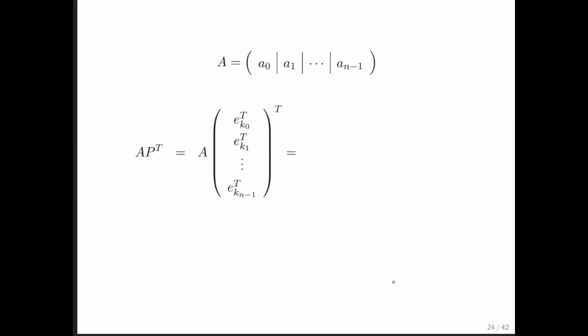We know that matrix P itself, as its rows, simply has the unit basis vectors ordered in the order indicated by the integers k0, k1 through kn minus 1. And then we know that we need to transpose that. Well, transposing that simply takes the rows and makes them into columns.